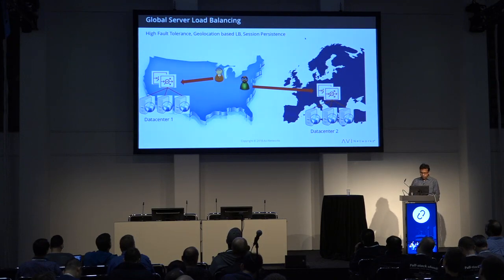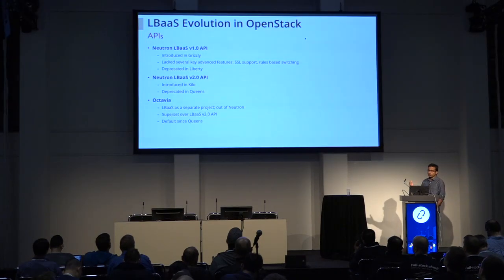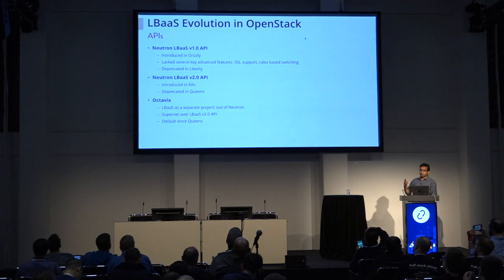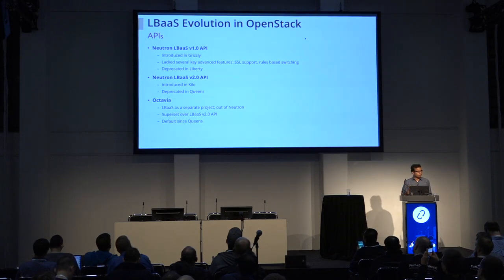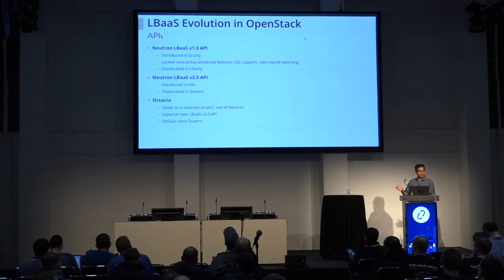Let's move on to the OpenStack LBaaS APIs and talk about how they have evolved over time. LBaaS was part of Neutron when it started. Neutron LBaaS version one was introduced in Grizzly — a very simple model that lacked a lot of features but gave basic load balancing. Over time, LBaaS V2 started to add all the features, and V1 was deprecated. LBaaS V2 has been around since Kilo.